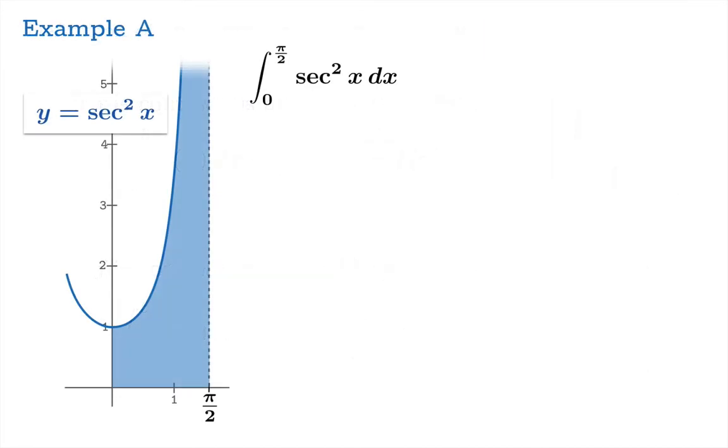So let's look at the example of the integral from 0 to pi over 2 of secant squared and we'll notice that there's a vertical asymptote at pi over 2. So to make sense of this we'll integrate from 0 to k and then we'll let k go to pi over 2 from the left.